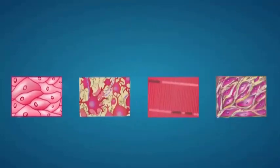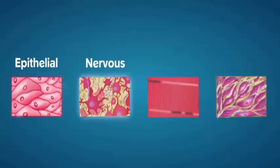Animal tissues are grouped into four basic types: epithelial, nervous, muscle, and connective tissues.